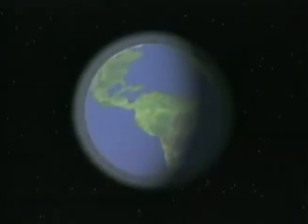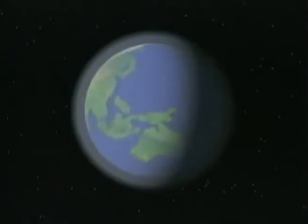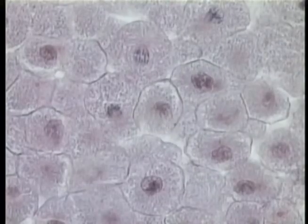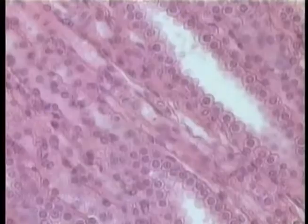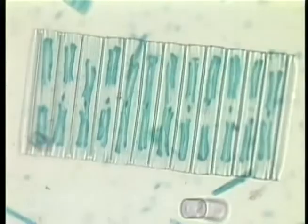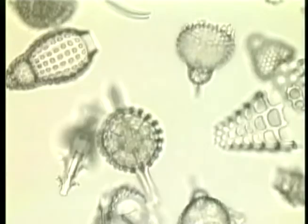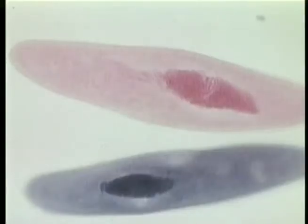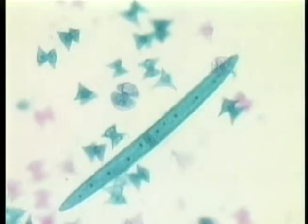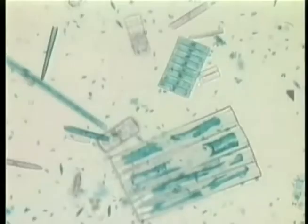Our planet is home to millions of unique and amazing organisms. The extraordinary diversity of life on this world is reflected in the world of cells. Cells vary in shape, size, and structure. This is a small sample of the seemingly endless variety of shapes found in the world of cells.